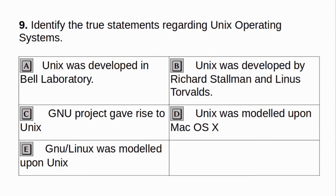Identify the true statements regarding Unix operating systems. a. Unix was developed in Bell Laboratory. b. Unix was developed by Richard Stallman and Linus Torvalds. c. GNU project gave rise to Unix. d. Unix was modeled upon Mac OS X. e. GNU Linux was modeled upon Unix. Answer: a and e.